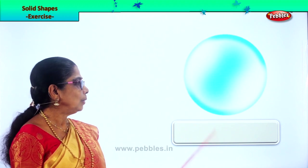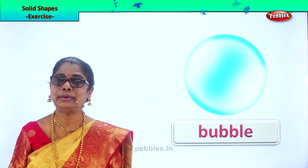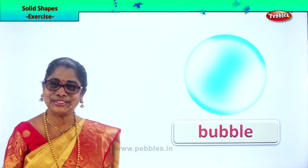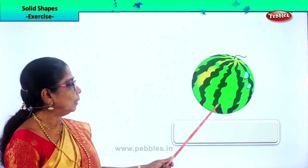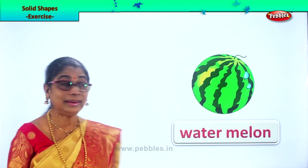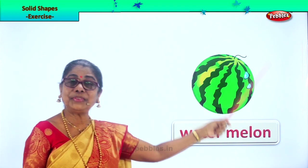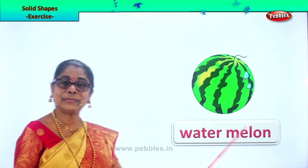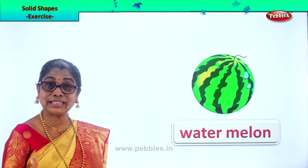What is this? A bubble. What is the shape of a bubble? Sphere — you can blow a bubble. Good. Next — what is this? I'm sure you will love this — watermelon! Yes, watermelon is an example of a sphere. What about your orange, sweet lime? All these are round, like a sphere.